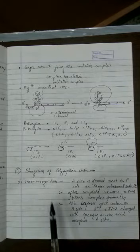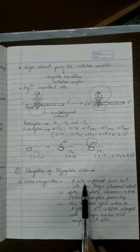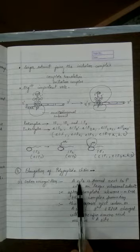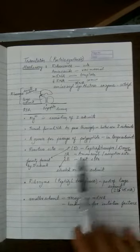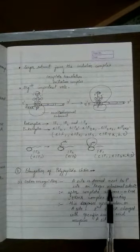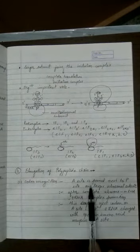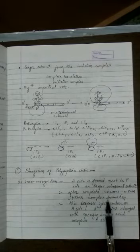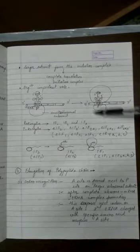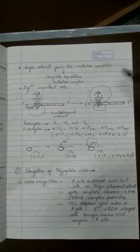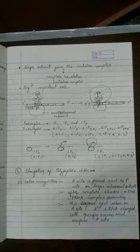The first step in elongation is codon recognition. An A site is formed next to the P site on the large subunit — remember, the A site is formed by only the large subunit. The A site is made available only after the complete ribosome is formed, that is, the complete ribosome, messenger RNA, and tRNA complex. Once this complex of three things is formed, the A site is made available, and it is always formed on the large subunit.